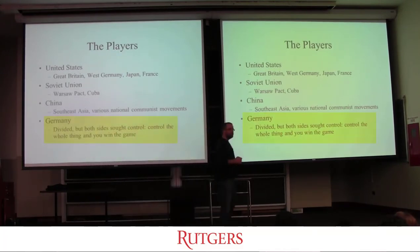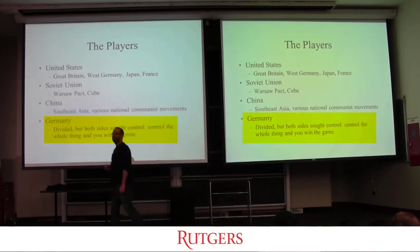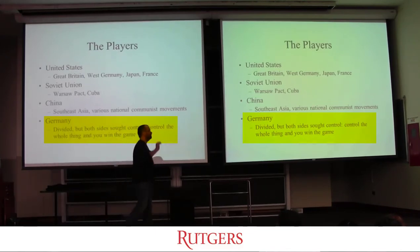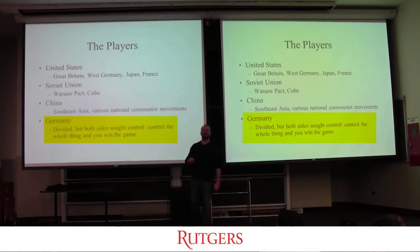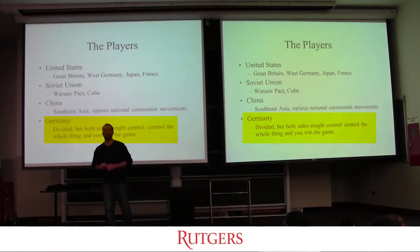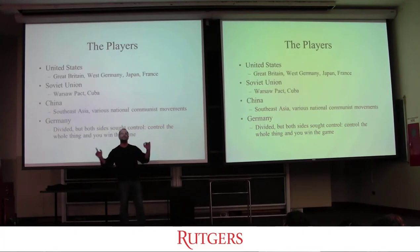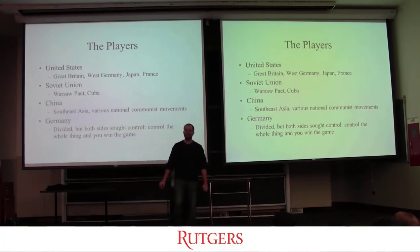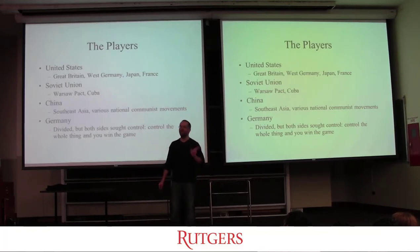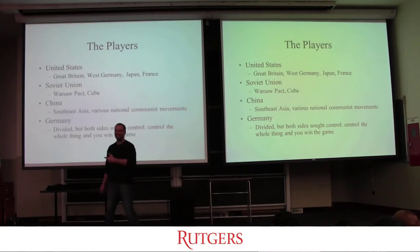Germany is important for one very important reason: whoever controls all of Germany wins the Cold War. Control both halves — game over. If West Germany ever falls to the Soviets, Soviets win. If East Germany falls to the United States, the US wins. Not surprisingly, as soon as the Berlin Wall came down in November 1989, Germany reunified. When the wall came down and people could travel east to west and west to east, they went east to west — there might have been one or two hipsters wanting to check out life in the east, but people went west.